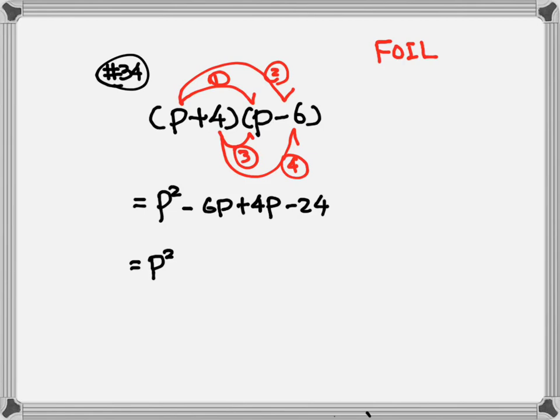So we are going to combine negative 6p plus 4p. Negative 6 plus 4 will be negative 2, keep the p. Then bring down the minus 24. That's the answer: p squared minus 2p minus 24.